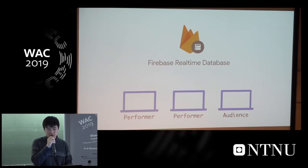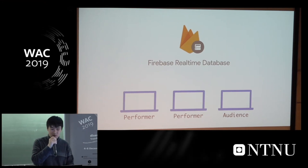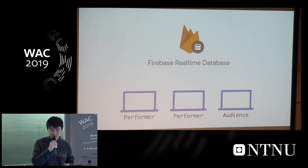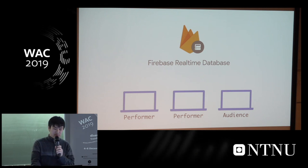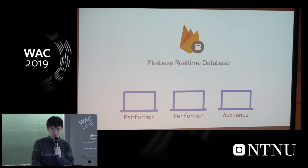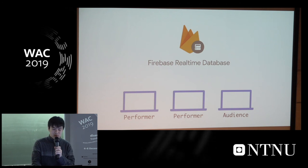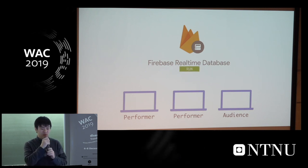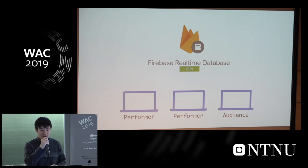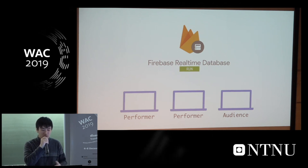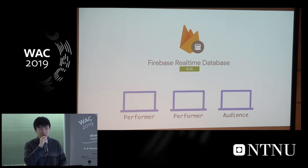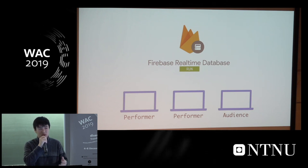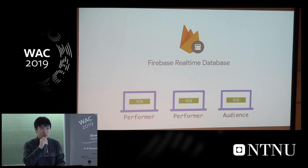In our environment, we also support collaboration even from different places in the world. We use the Firebase Realtime Database to support this kind of collaboration. Performers and audience can enter the same room — one performer can send a run signal, which changes a state entry in the Firebase database. Each client, including both performers and audience, has a monitoring function that monitors this entry. Once it detects a change in the run entry, it will run the code together.